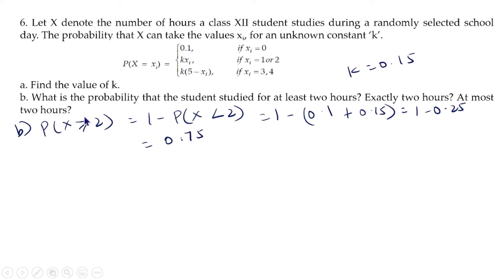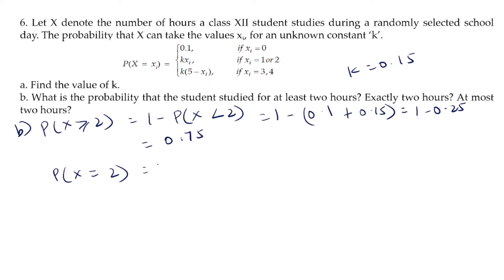Probability that the student studied exactly 2 hours: P(X = 2) = 2K = 2 × 0.15 = 0.3.